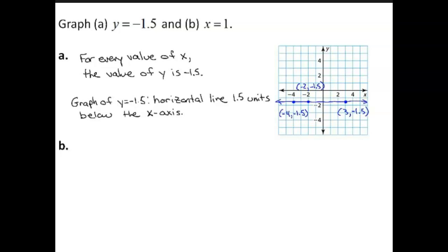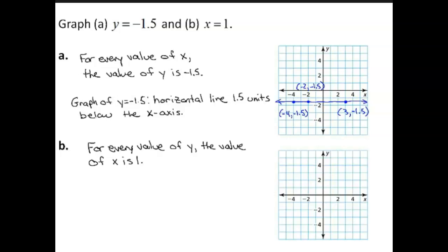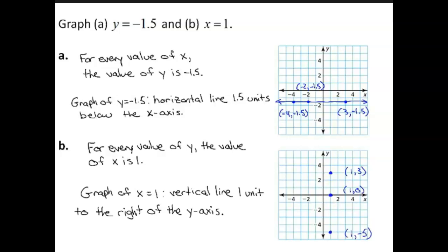Part B. For every value of y, the value of x is 1. For instance, when x equals 1, y equals 3, 0, and negative 5. So the graph of x equals 1 is a vertical line 1 unit to the right of the y-axis.